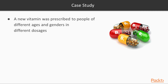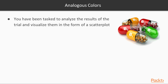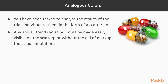Continuing with our dataset: a new vitamin was prescribed to people of different ages and genders in different dosages. At the end of the trial, they were all given the same control exam to test their cognitive ability. We have been tasked to analyze the results of the trial and visualize them in the form of a scatterplot. Any and all trends you find must be made easily visible on the scatterplot without the aid of markup tools and annotations.